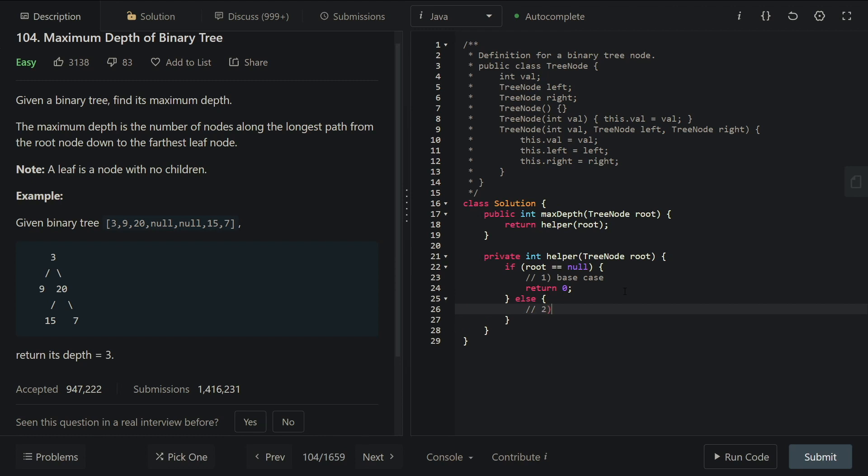And this is where we do our recursive case. First, we need to check our left subtree by calling the helper function and pass in the root dot left. And we are repeating the process for the right subtree. And lastly, we're just gonna compare the left and right subtree and pick the greatest one. And add one which is representing ourself. And I think this is it, Josh.